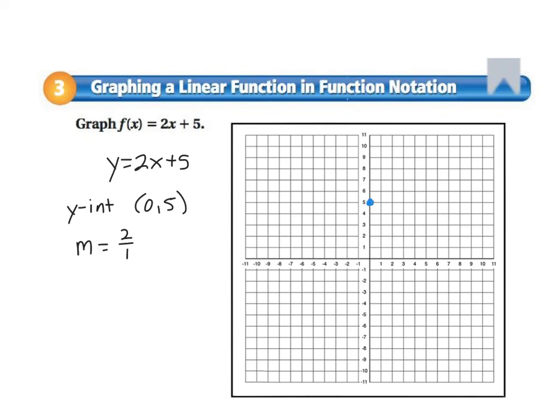So we're just going to graph it just like any other linear equation that we've graphed in the past. So we start with our y-intercept and we do rise over run. So up 2 right 1 or down 2 left 1. And then connect your dots and you're done. So really don't be intimidated when you see this.